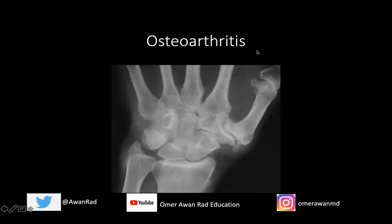Let's take a look at the wrist. Starting here at the third CMC joint, which is totally normal — we see a nice joint space, no bony proliferation in the form of osteophytes, no subchondral sclerosis or cystic change. And let's take a look at the most common place to get osteoarthritis in the wrist, which is the first CMC or first carpal metacarpal joint between the base of the first metacarpal and the trapezium. Notice that there's a lot of new bone formation in the form of osteophytes, subchondral sclerosis, increased density along the subarticular bone, even some cystic change — subchondral cysts, these lucencies here.